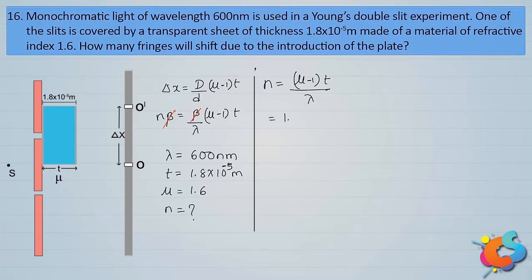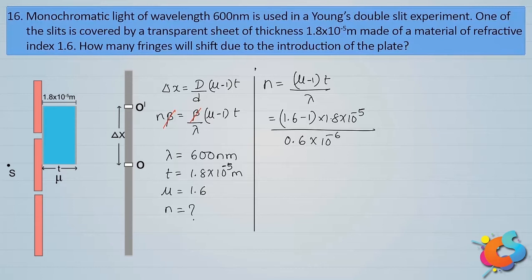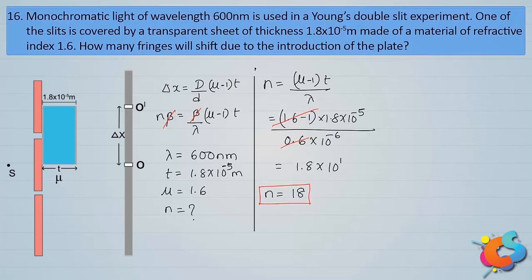Substituting the values: n = (1.6−1) × 1.8×10⁻⁵ / (6×10⁻⁷). That is 0.6 × 1.8×10⁻⁵ / 0.6×10⁻⁶. Cancelling 0.6, we get 1.8×10⁻⁵ / 10⁻⁶ = 18. So n = 18, meaning 18 fringes shift, or delta x equals 18 fringe widths.